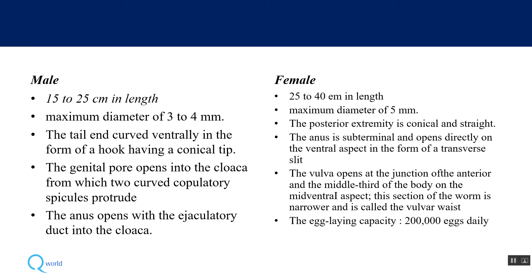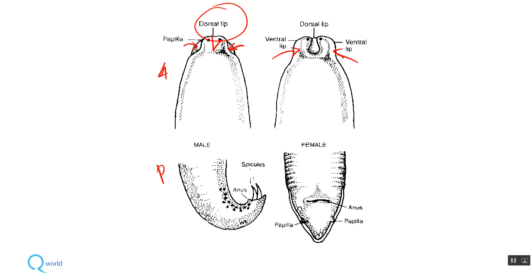Both male and female adult worms are seen. The male worm is shorter and has a smaller diameter — 3 mm compared to 5 mm for the female. The tail end is curved ventrally in the male worm, while it is conical and straight in the female worm.